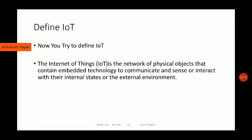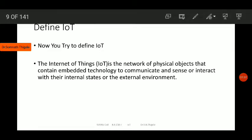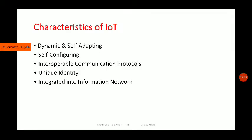So what should be the characteristics of IoT if it is going to be globally accessed? The highlighting point for today's interaction is characteristics of IoT. The listed characteristics are: it must be dynamic and self-adapting, self-configuring, it must use interoperable communication protocol (ICP), have unique identity, and be integrated into the information network.